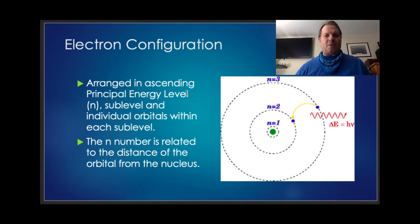So let's talk about the first points here. Electrons are arranged in an ascending principal energy level, what we call the n. That's divided up into sub-levels and individual orbitals within each sub-level. Now this principal energy level n is actually related to the distance of those orbitals from the nucleus. So looking at this drawing on the right, our first principal energy level is very close to the nucleus, energy level 1, principal energy level 2 is a little further away, principal energy level 3 is further away than that, 4, 5, 6, 7, etc. So they're getting further and further away the higher the principal energy level becomes.